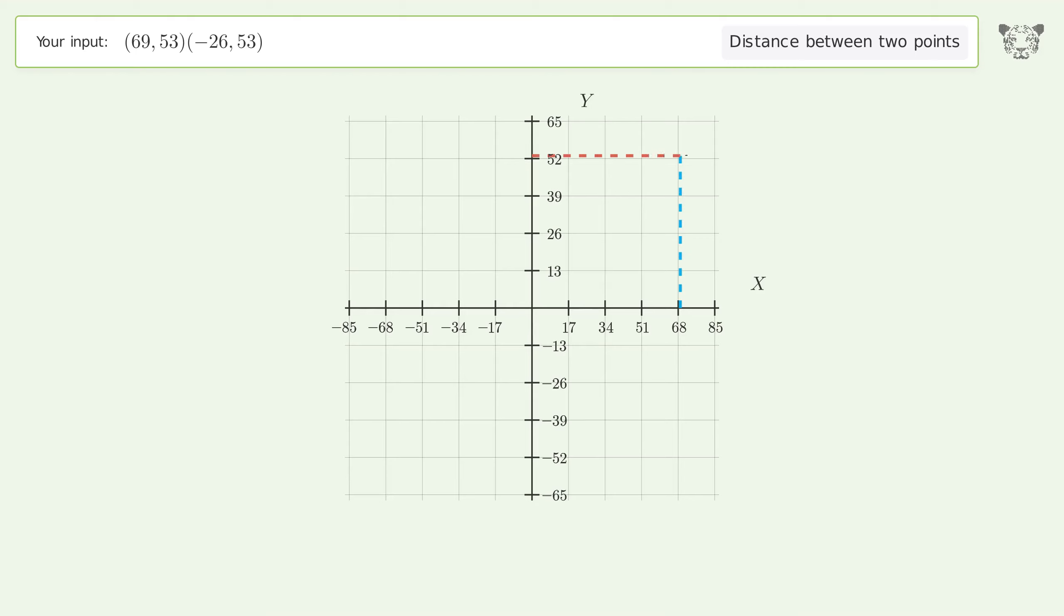The coordinates of Point 1 are x₁ = 69 and y₁ = 53. The coordinates of Point 2 are x₂ = -26 and y₂ = 53.